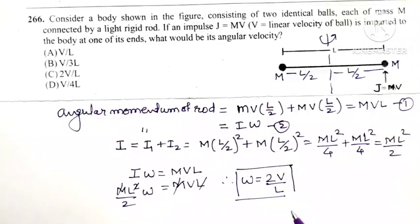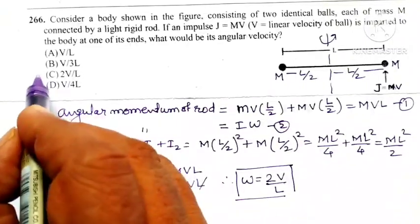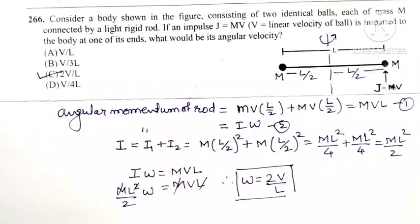So out of four options, 2V divided by L means option C. C is the correct option for this question.